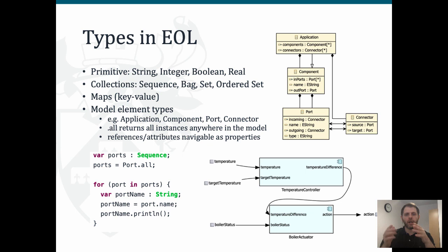EOL provides four types of built-in collections: Sequence, Bag, Set, and OrderedSet. The way these collections differ from each other is based on whether they are ordered and unique. A Sequence is an ordered collection that is not unique, so it accepts duplicates. A Bag is neither ordered nor unique. A Set is unique but doesn't guarantee order. There is also a Map type, very similar to HashMap in Java or Dictionary in other languages.